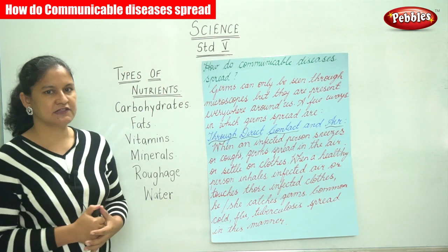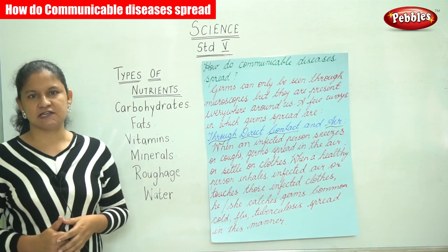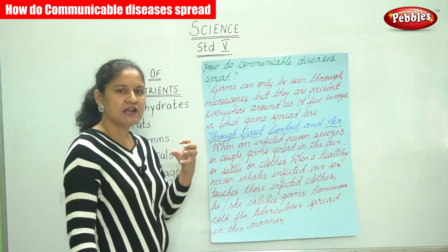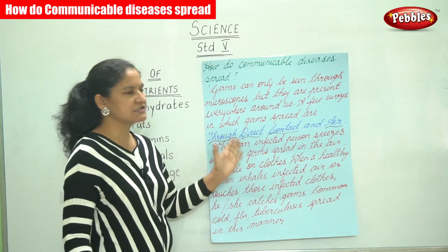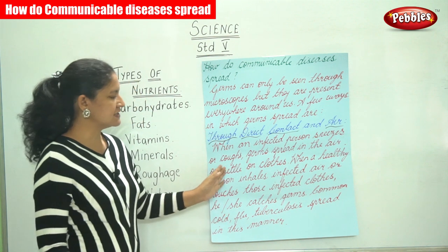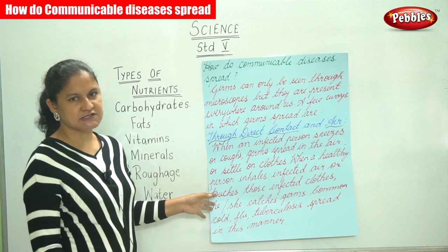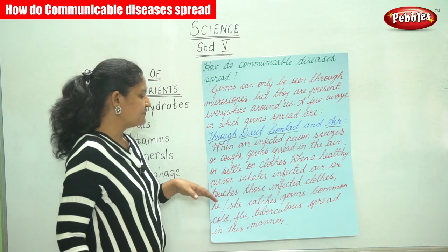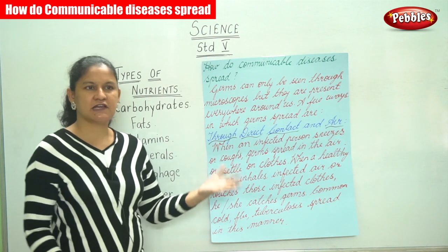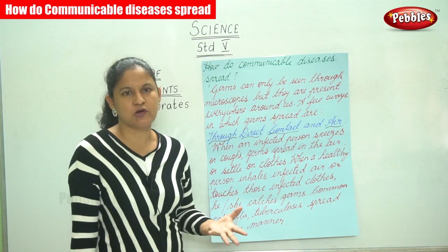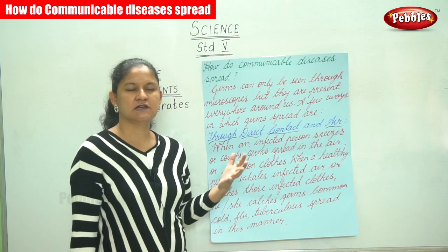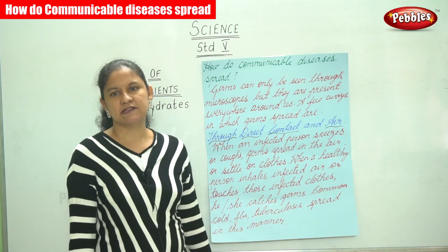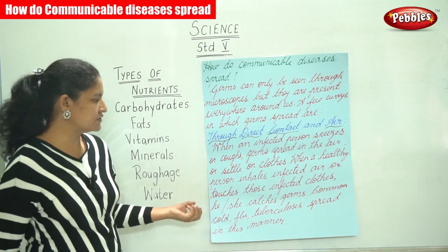Germs spread through direct contact or through the air. When an infected person — that is a person who is sick — sneezes or coughs, germs spread in the air or they settle on clothes. When a healthy person inhales the infected air or touches those infected clothes, they catch the germs. If we look around now with the spread of the pandemic, that is corona, it spreads because an infected person tends to sneeze or cough and those germs move on to a healthy person. So we need to be very careful.